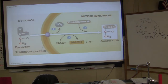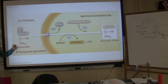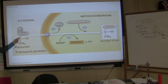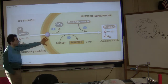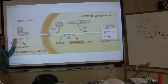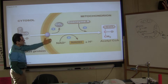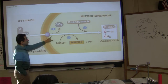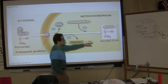Pyruvate — how many carbons? Pyruvate has three carbons. Transport proteins on the mitochondria will transport pyruvate into mitochondria. However, it is converted into acetyl-CoA.